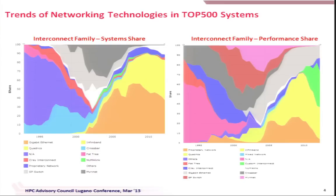The two broad categories are Ethernet and InfiniBand. InfiniBand started around 2000 and gradually grew, and the number of InfiniBand systems in the Top 500 has been growing over the years. Performance-wise, InfiniBand delivers much more performance than Ethernet — this gap is widening. At the same time, there are a lot of proprietary systems also contributing significantly, like the K supercomputer.